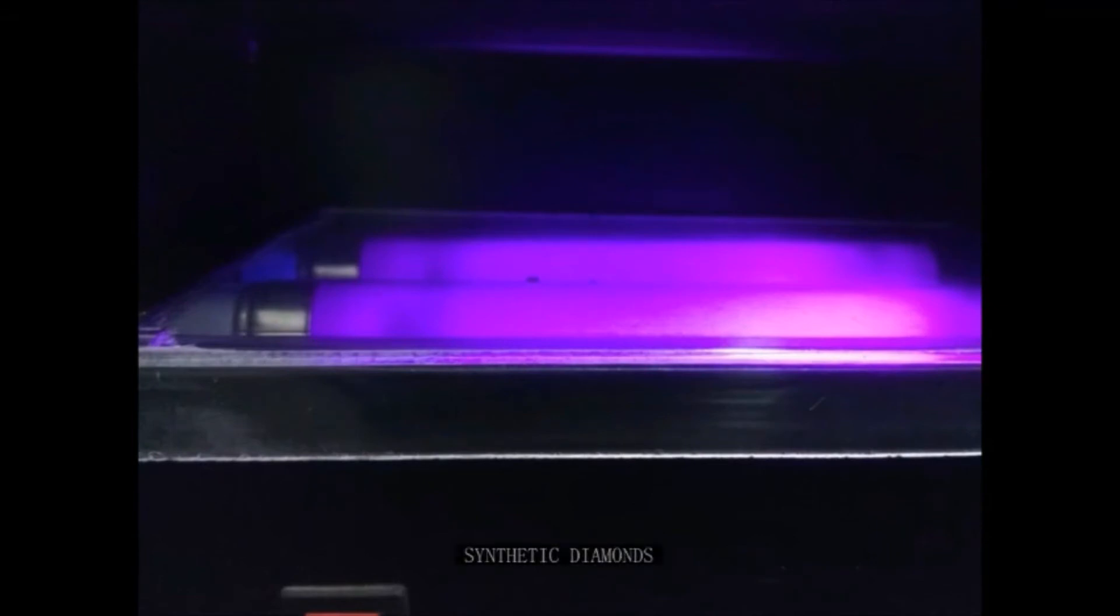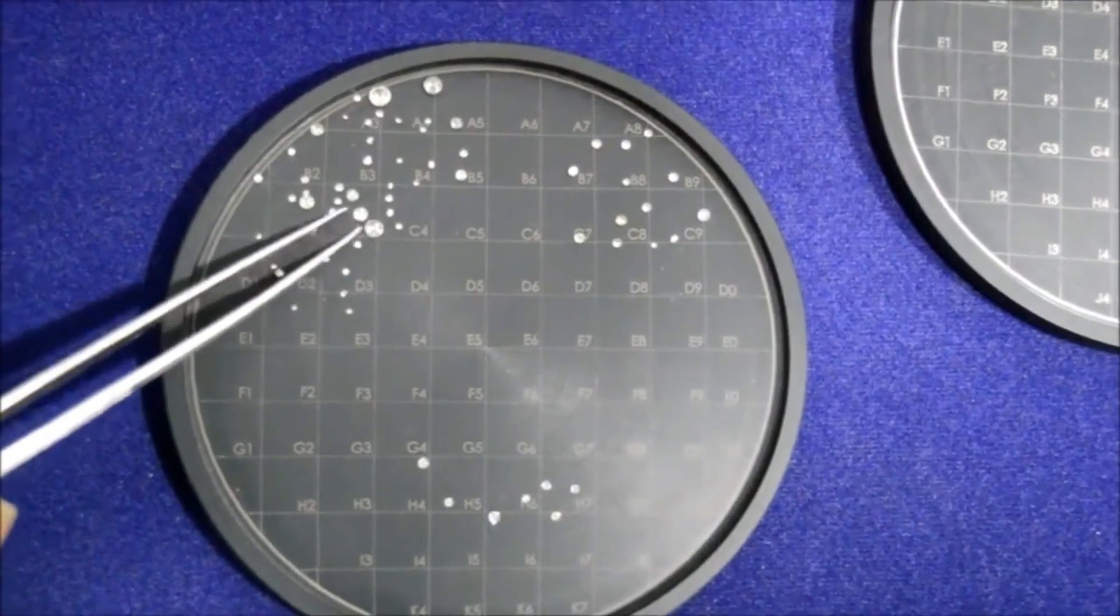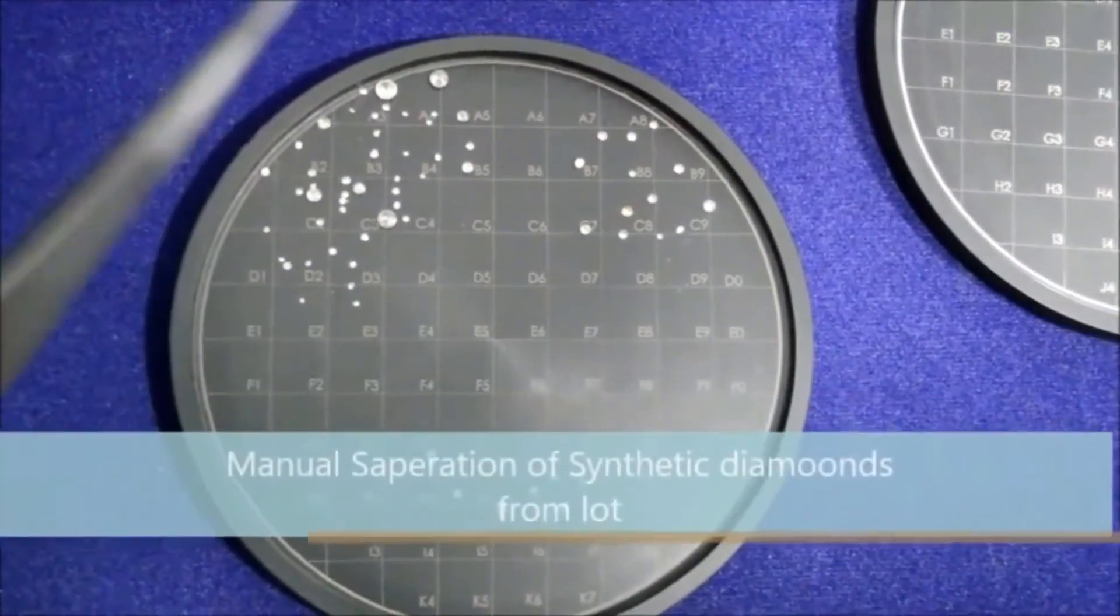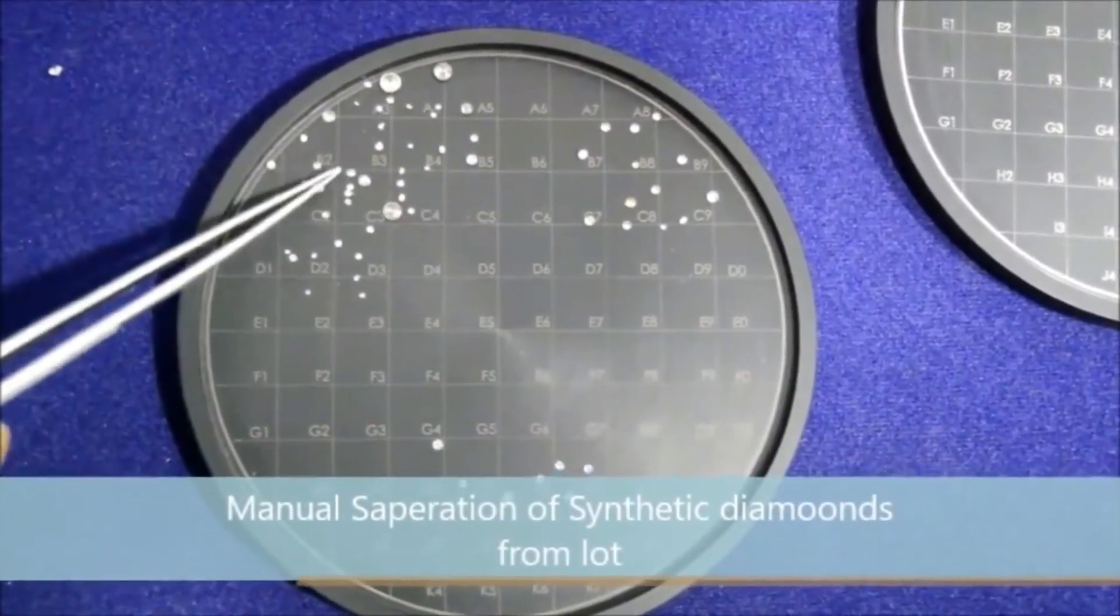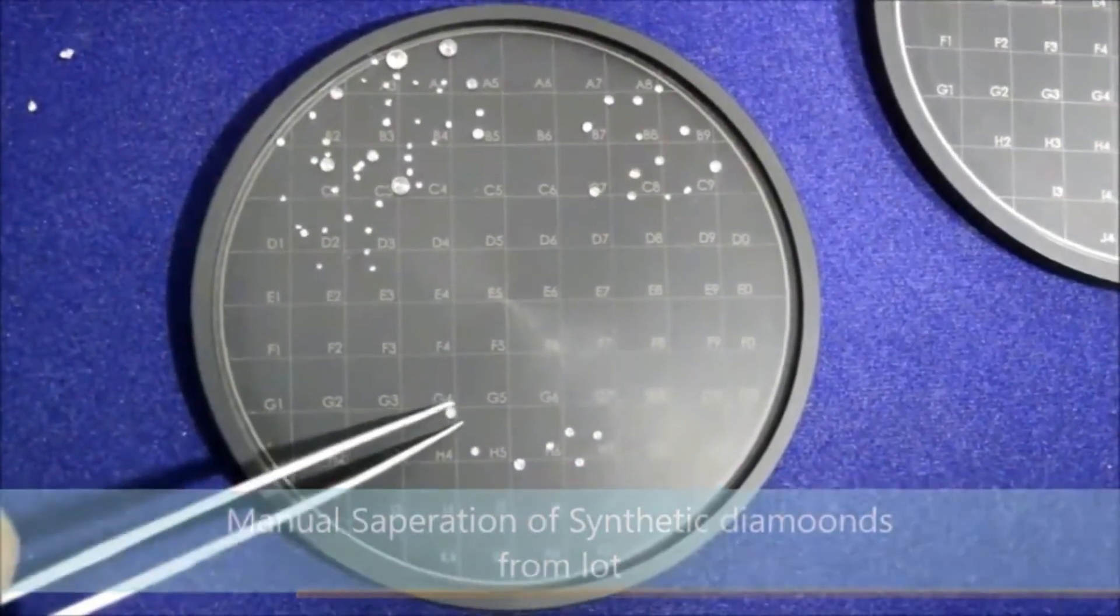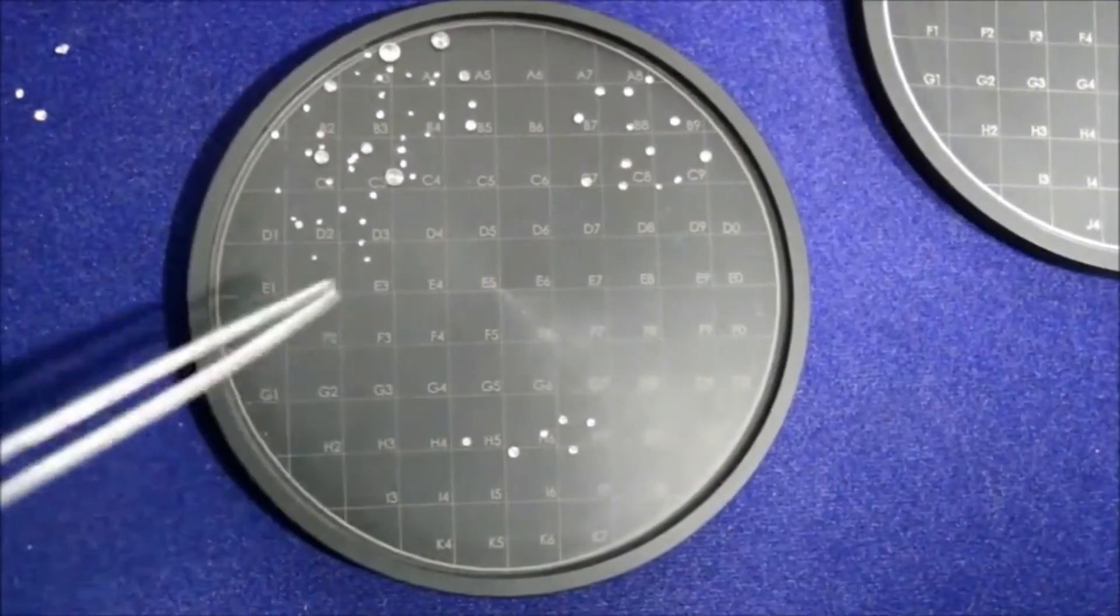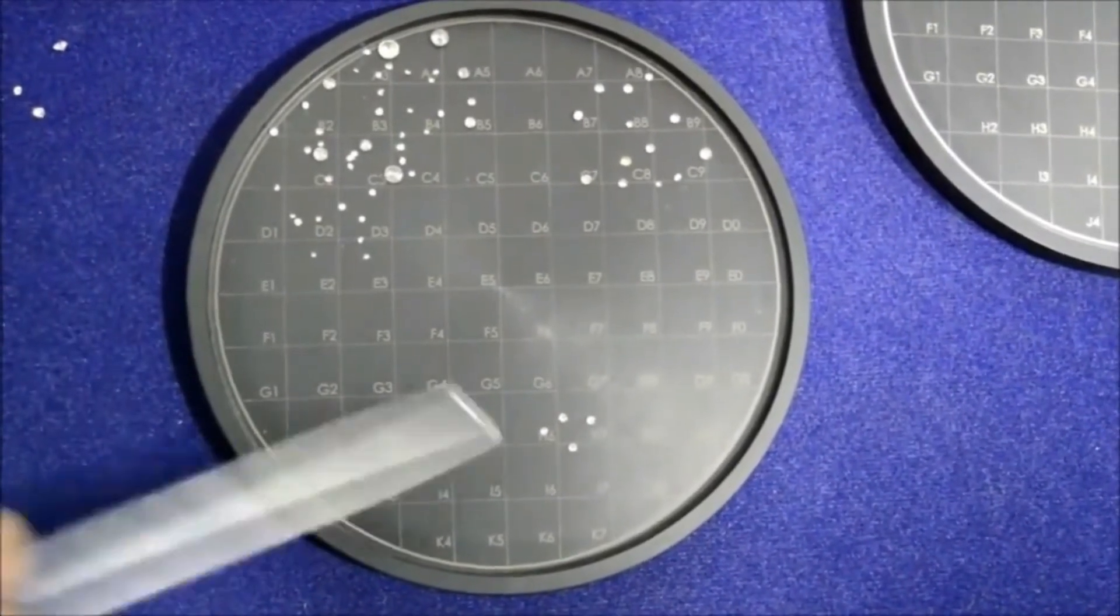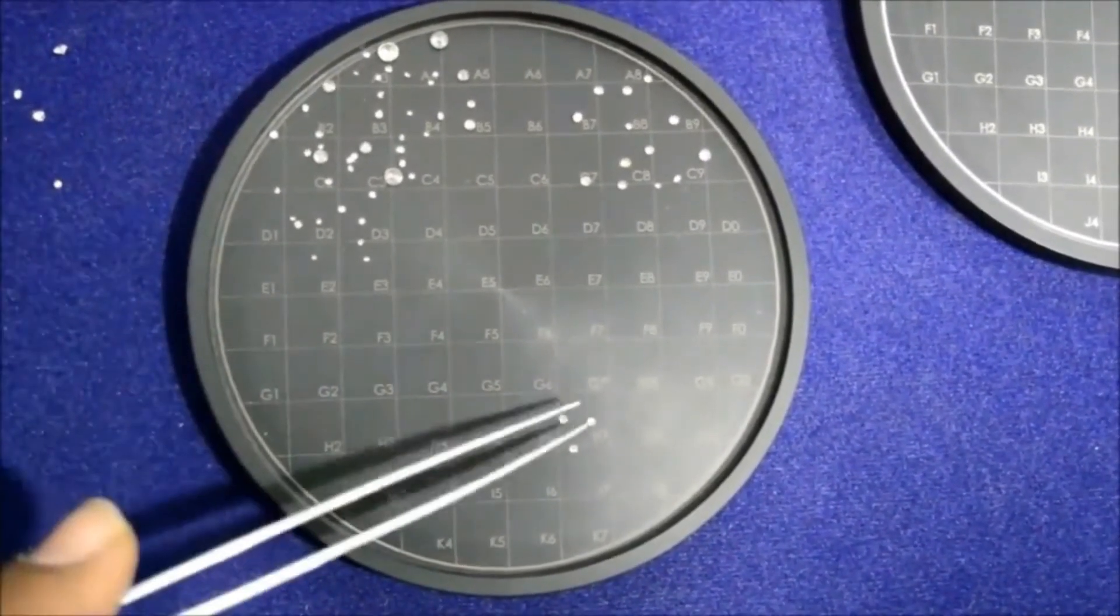Strongly glowing blue color in result image are definitely a synthetic one. Start separating synthetic diamonds manually based on test results carefully. Your grid helps you to pick a particular diamond from clustered diamonds inside tray. Repeat test for scanning more diamonds multiple times if lot size is bigger.